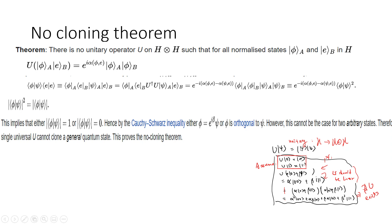The standard proof is that there is no unitary U on H tensor H, where H is a finite-dimensional complex Hilbert space, such that U|φ⟩ = |φ⟩|φ⟩. So U|0⟩ maps to |0⟩|0⟩ and U|1⟩ maps to |1⟩|1⟩. But U(α|0⟩ + β|1⟩) by linearity gives α|0⟩|0⟩ + β|1⟩|1⟩, which is not the same as (α|0⟩ + β|1⟩) tensor (α|0⟩ + β|1⟩), which expands to α²|00⟩ + αβ|01⟩ + βα|10⟩ + β²|11⟩. So no such U exists.